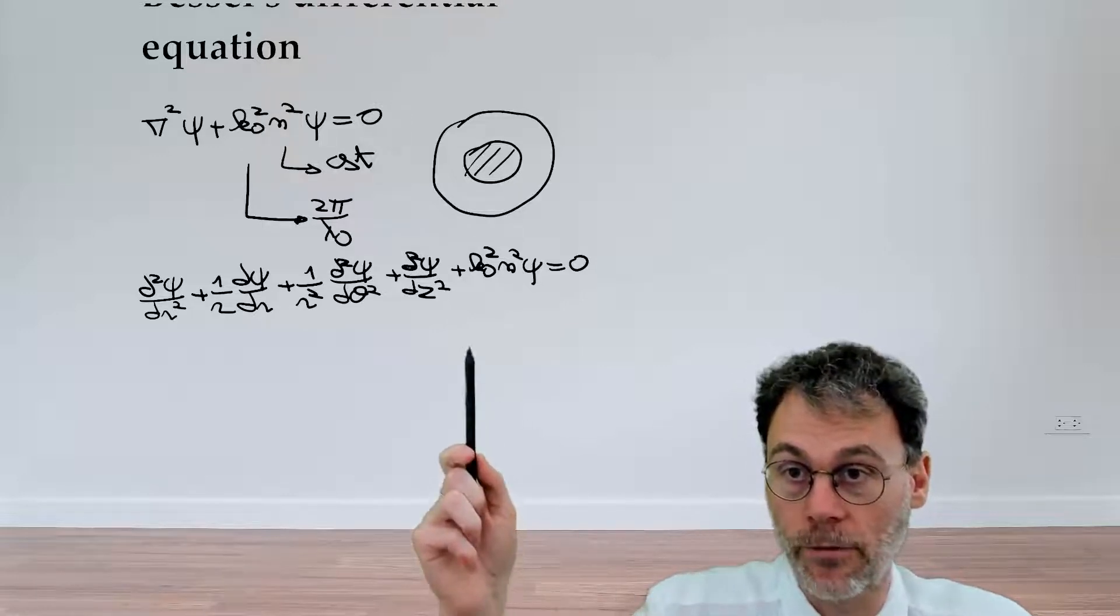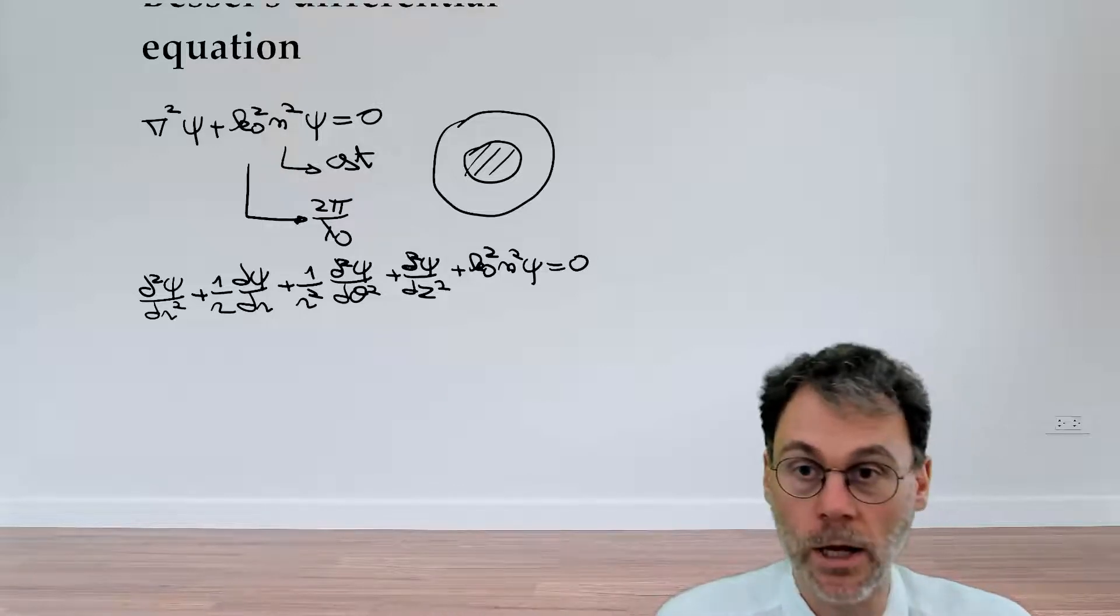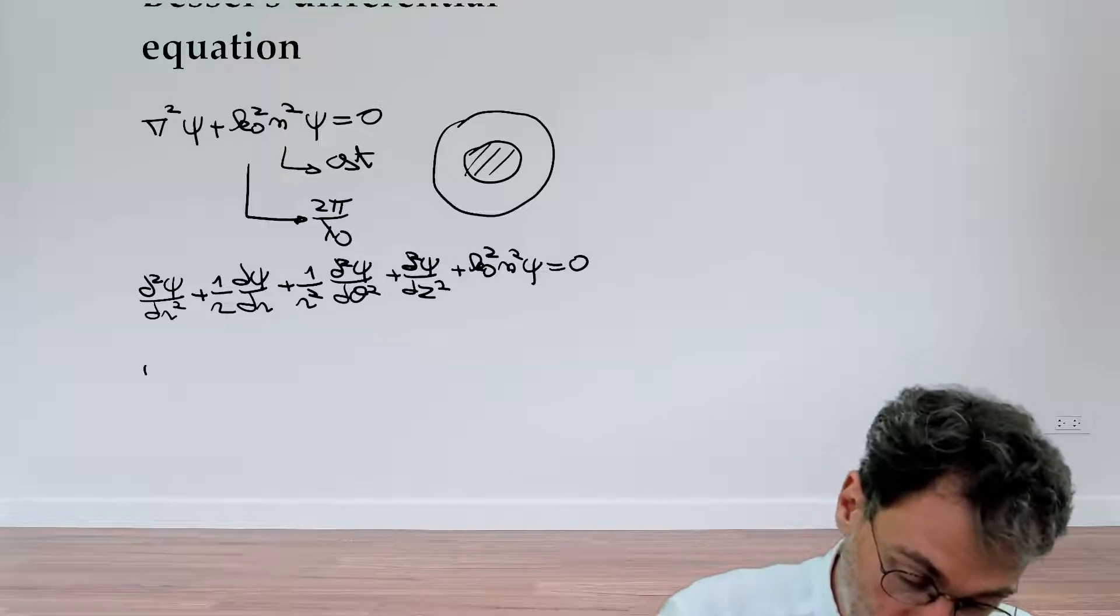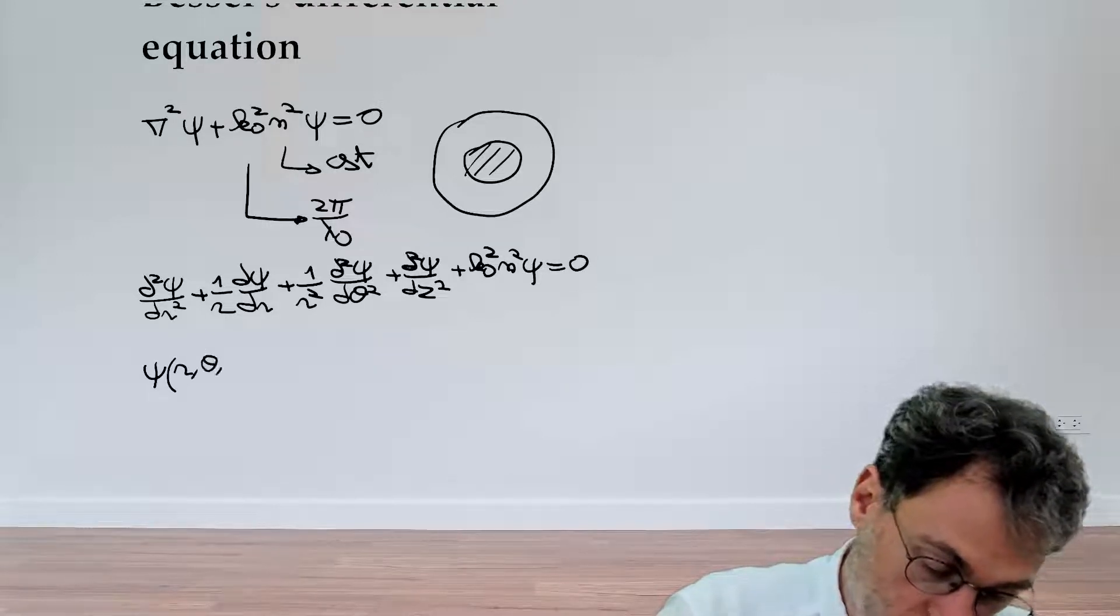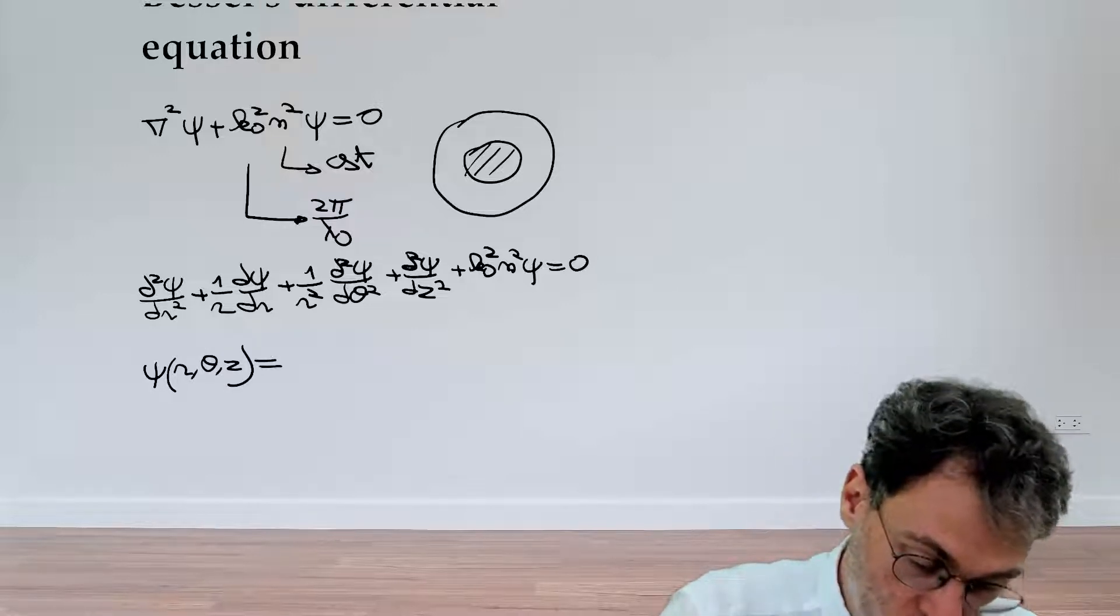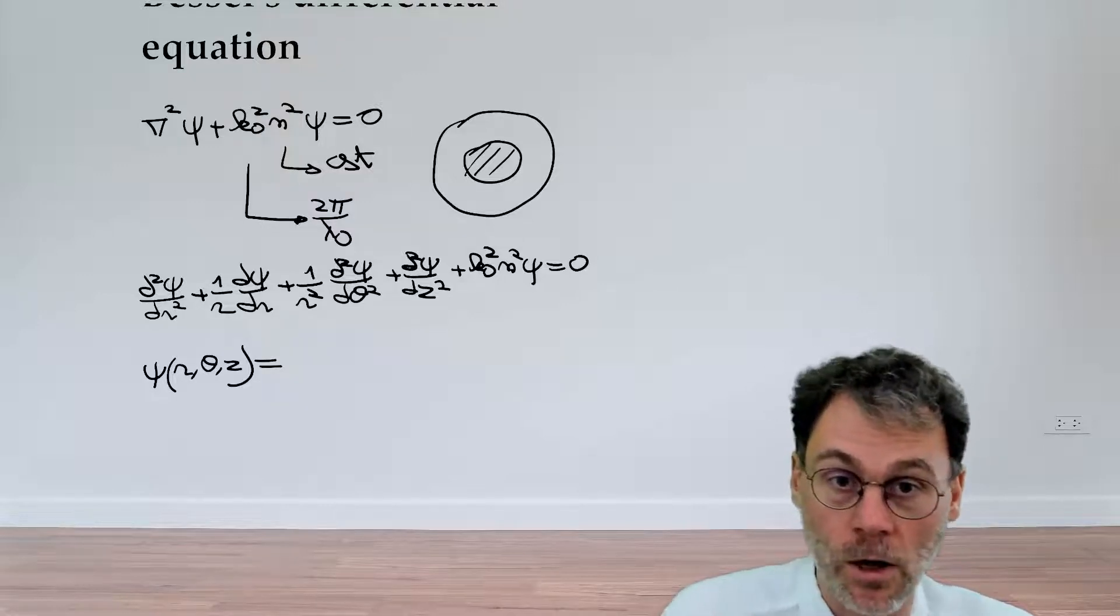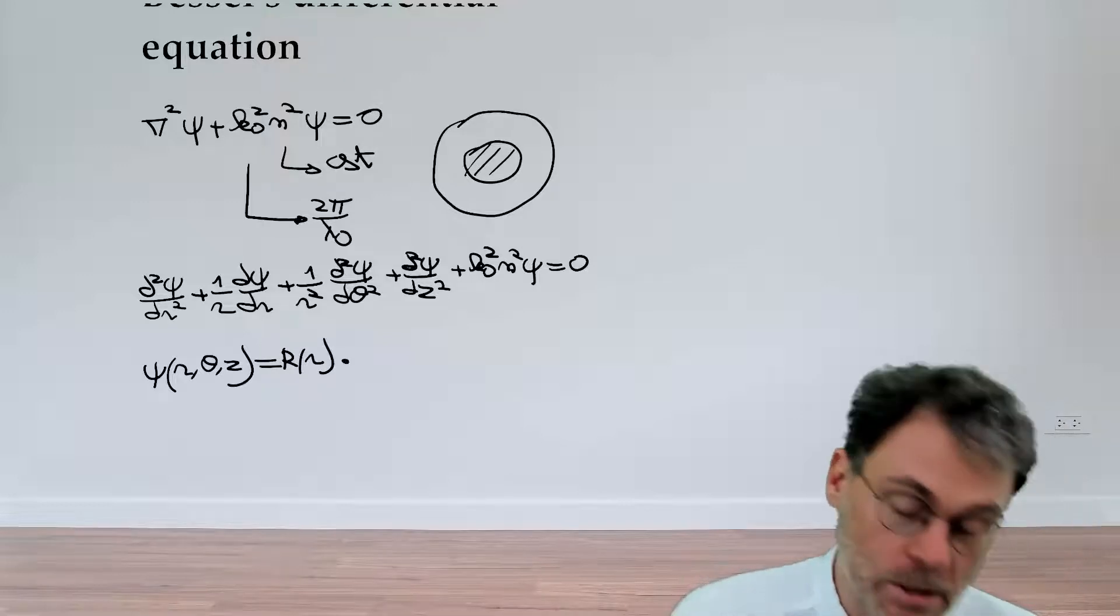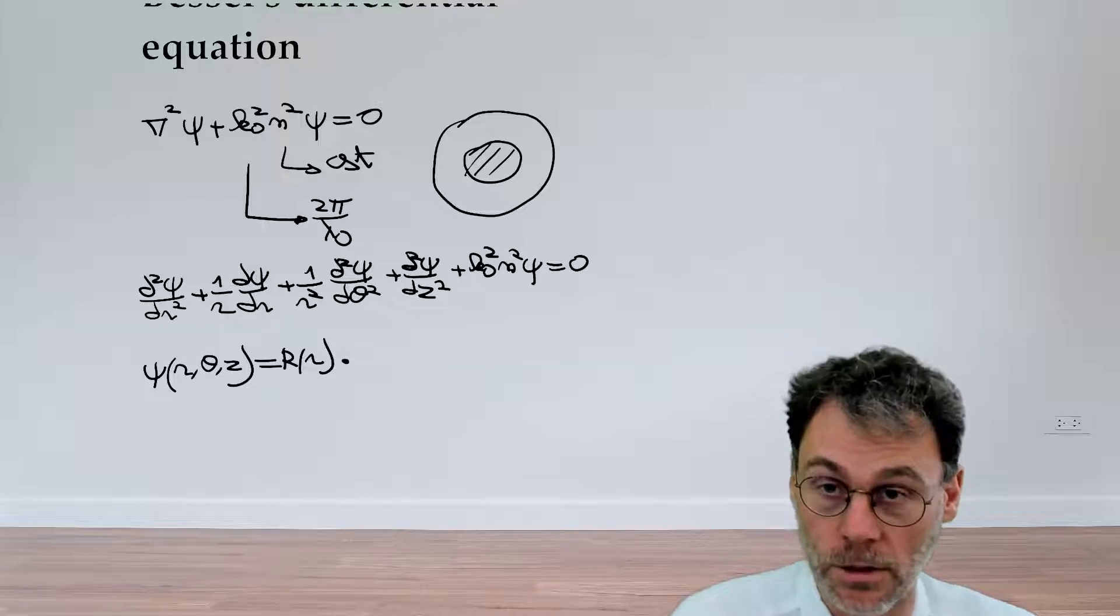Let's take a step more in trying to solve this equation by the separation of variables. In general, our field depends on the radial coordinate, the angle coordinate, and the z component. But we're going to assume we can use a form which is a product of three different functions where the first function only depends on radial coordinates, second function only depends on θ, and the final function only depends on z.